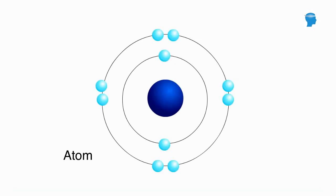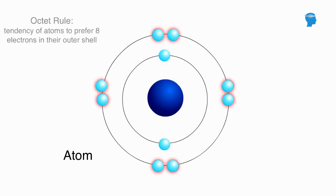The outer shell of many atoms, hydrogen being an exception, holds 8 electrons. Atoms that have an outer shell containing 8 electrons are considered chemically stable. We often say they fulfill what is called the octet rule.